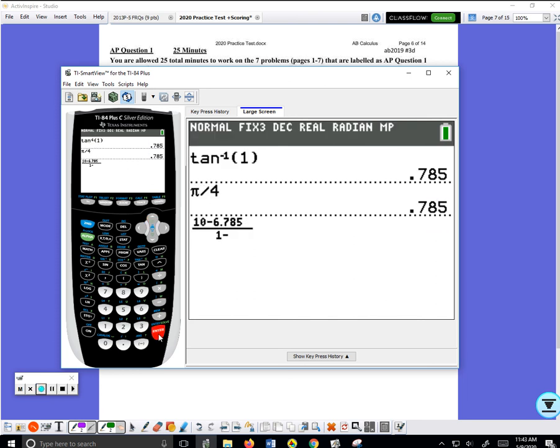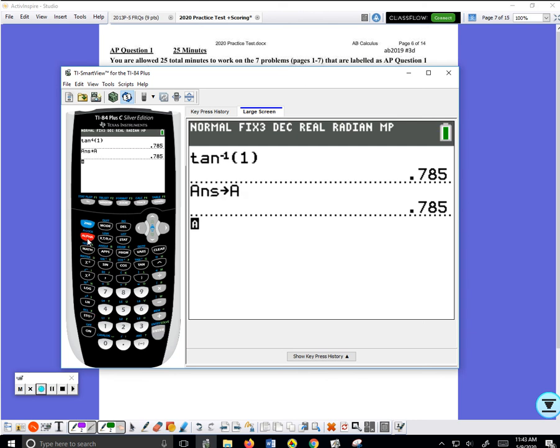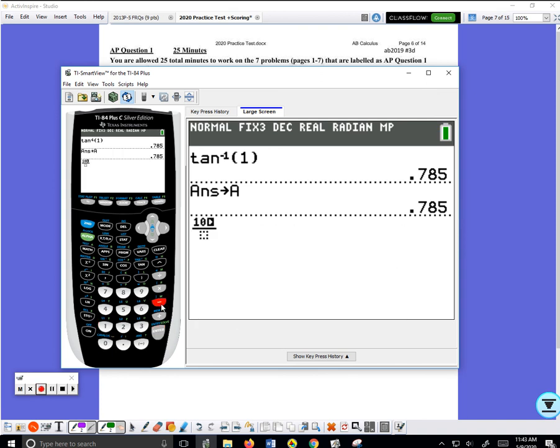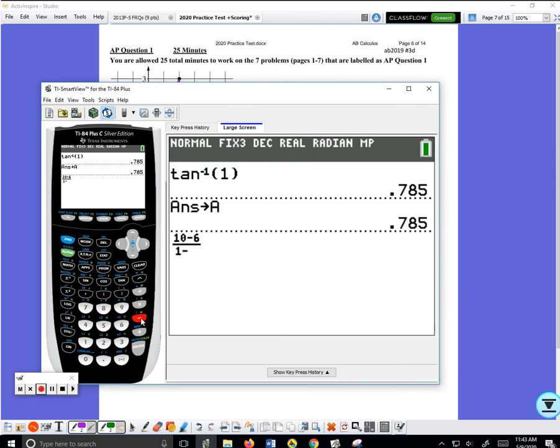So we have to store it. I do the arctangent again, second arctangent of 1 and then store that, store alpha a. Now I can do the fraction: ten minus six divided by one minus alpha a.